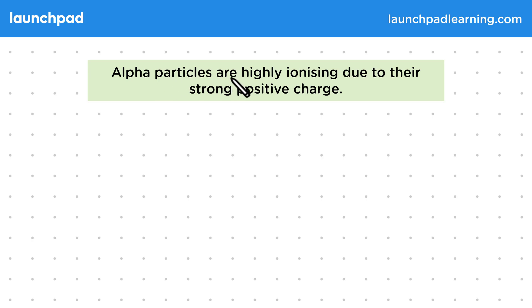Alpha particles are highly ionising due to their strong positive charge. Remember that by ionisation, we mean when atoms become ions by gaining or losing electrons. So here, the alpha particle has a charge of 2+, since it contains two positive protons and no negative electrons.